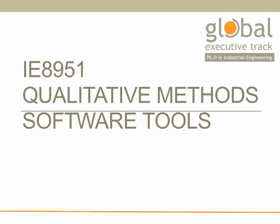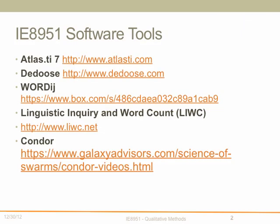Hello and welcome to the Global Executive Track PhD in Industrial Engineering at Wayne State University. The purpose of this video is to explore the qualitative methods software tools required for the class Industrial Engineering 8951. There are five software tools that the qualitative methods class will be using.